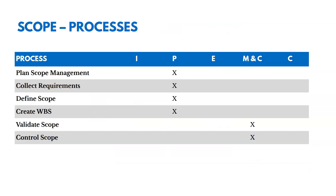There are six processes in this knowledge area. In planning, we're going to plan scope management, collect requirements, define scope, and create the WBS. And then in monitoring and controlling, we're going to validate and control the scope.